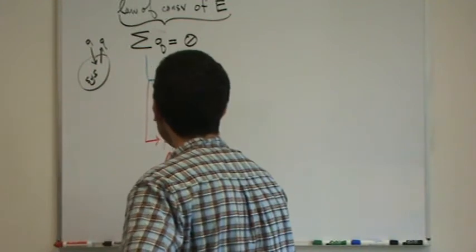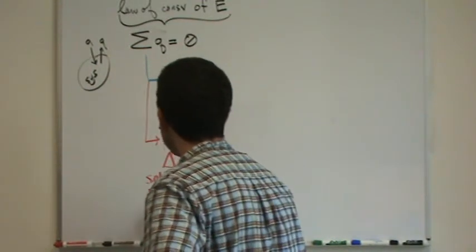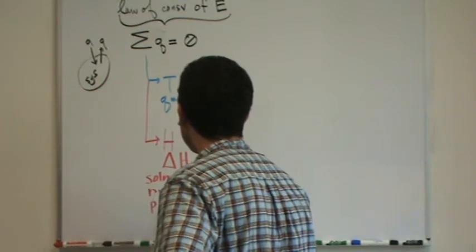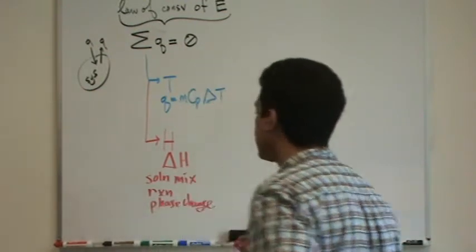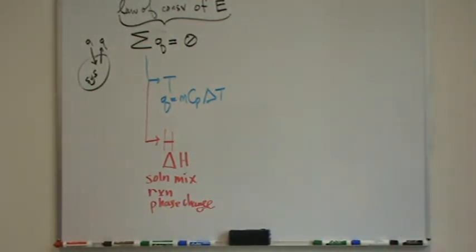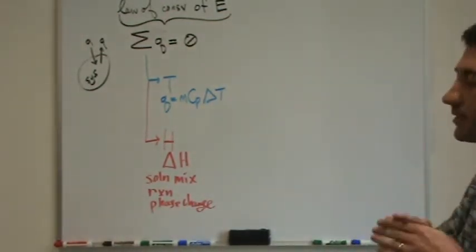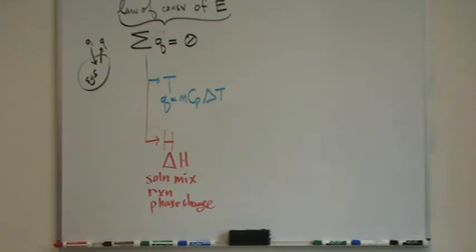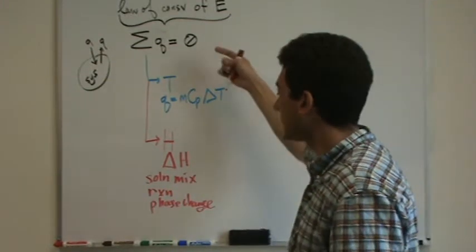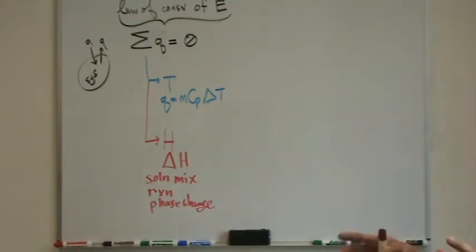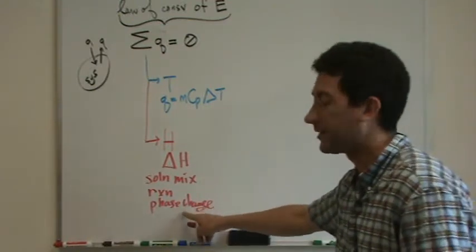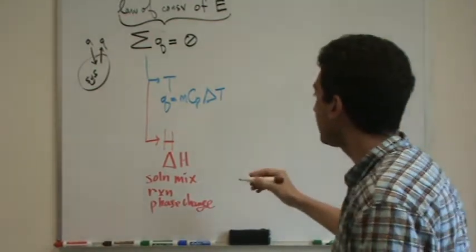This could be from a reaction, or this could be from a phase change. So if you're looking at a problem and you saw a reaction happen, there is definitely a delta H that needs to go in here. If you look at a reaction and there's a solution mixing, that's really this chapter, so we haven't seen an example yet, but there would be a delta H. If you're looking at a reaction, something happening in a system, and something changes phases—it melts, it freezes, it boils, it condenses—there's a delta H for that.